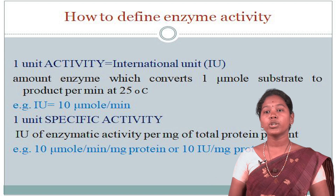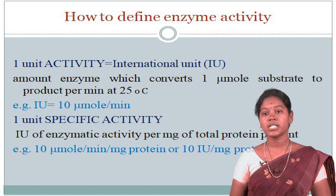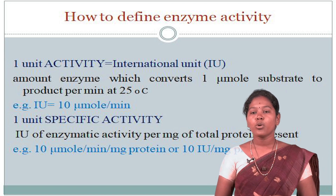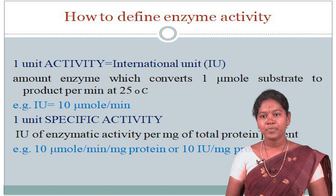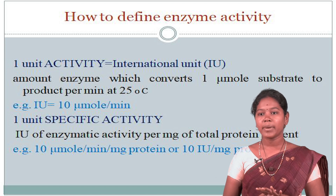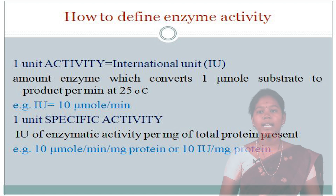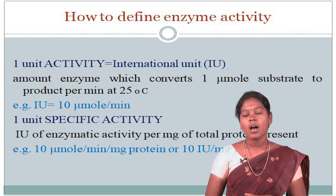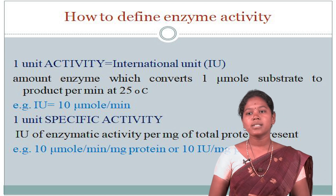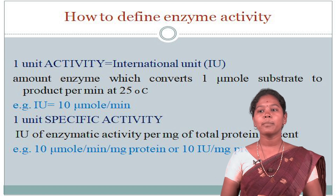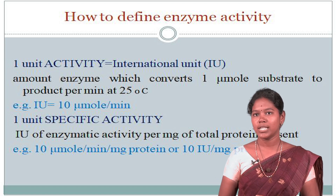Next, specific activity. Specific activity means IU of enzyme, or enzymatic activity, per milligram of total protein present. Example: 10 micromoles per minute per milligram protein, or 10 IU per milligram protein.